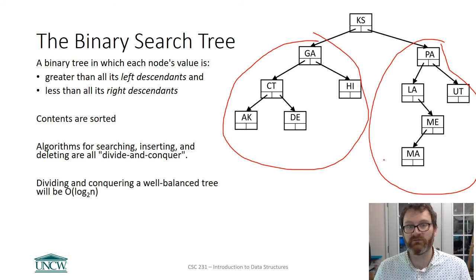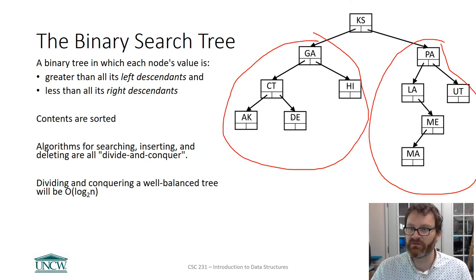Similarly, let's take a look at CT. A binary search tree, any node, it's going to be greater than its left descendants, less than its right descendants. CT is greater than AK, but less than DE. Take a look at the root node. KS is greater than all of these descendants over here, but it's less than all of these descendants over here. So that's what makes a binary search tree a binary search tree. Now we're going to code one of these things and it's going to be up to us, the programmer, to make sure of this property.